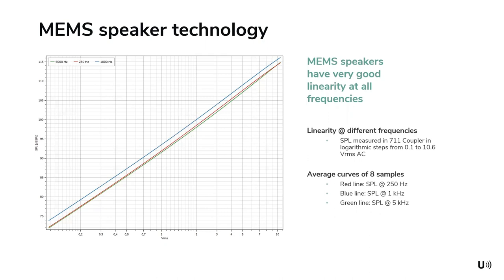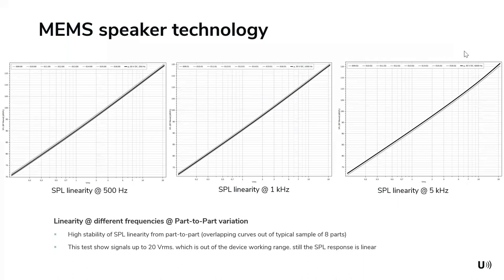This chart shows the very good linearity of the MEMS speaker over the full bandwidth. On the Y-axis is sound pressure level (SPL); on the X-axis is voltage. MEMS are driven by voltage, and the higher the voltage, the higher the SPL — with almost perfect linearity. We measured this at different frequencies, and the linearity is consistently very good. Part-to-part variation in voltage versus SPL linearity is consistent across several parts and even between several batches.